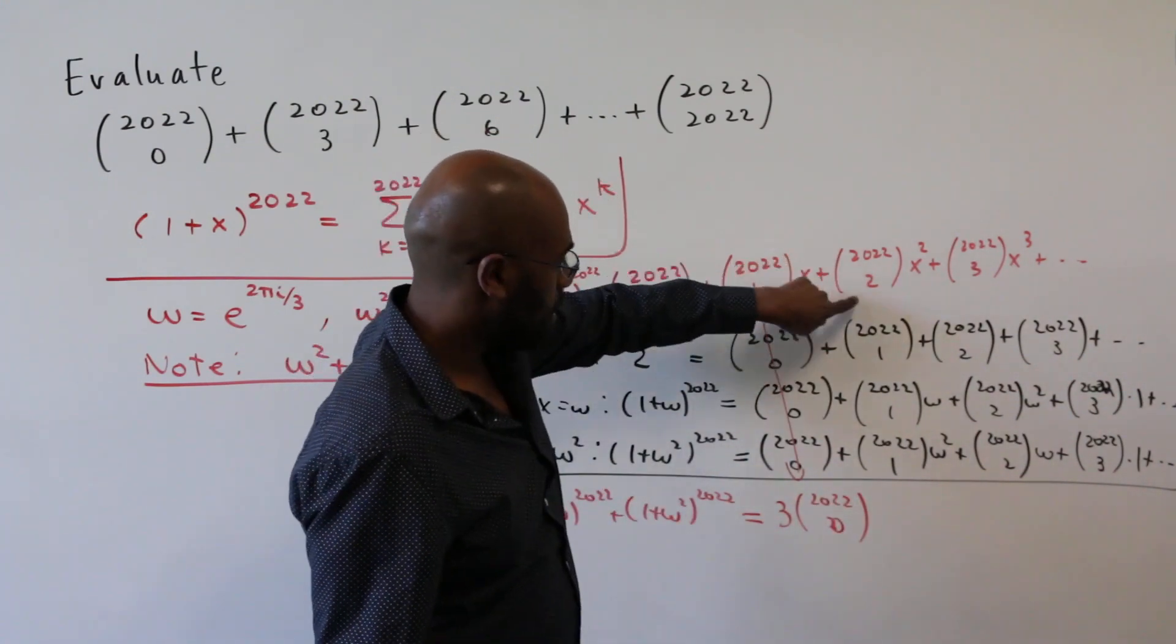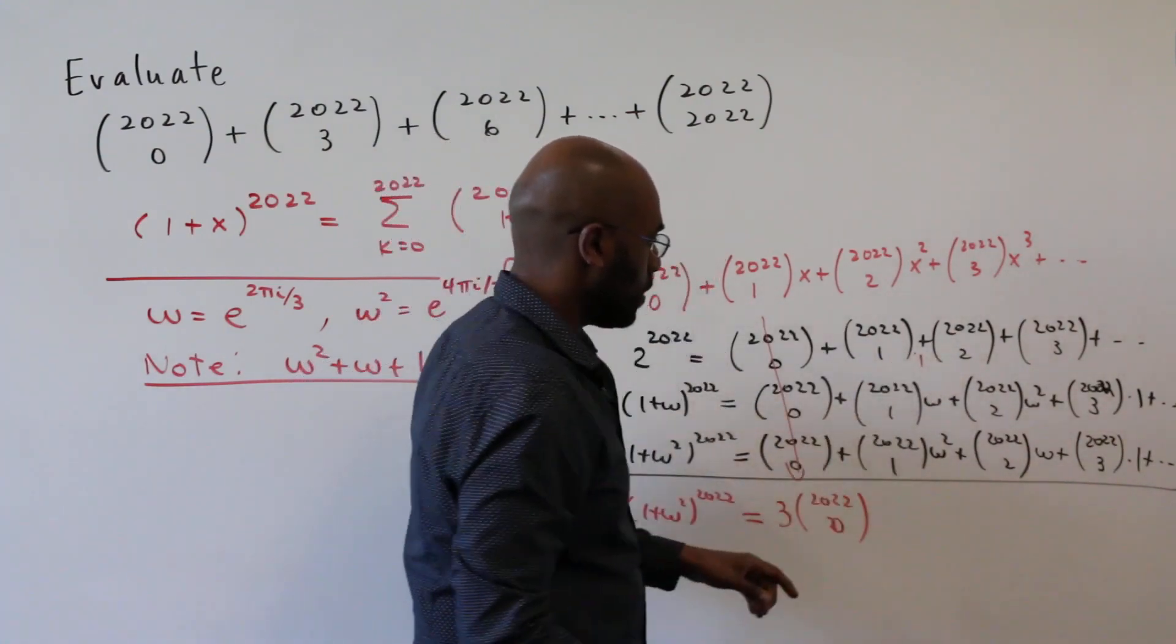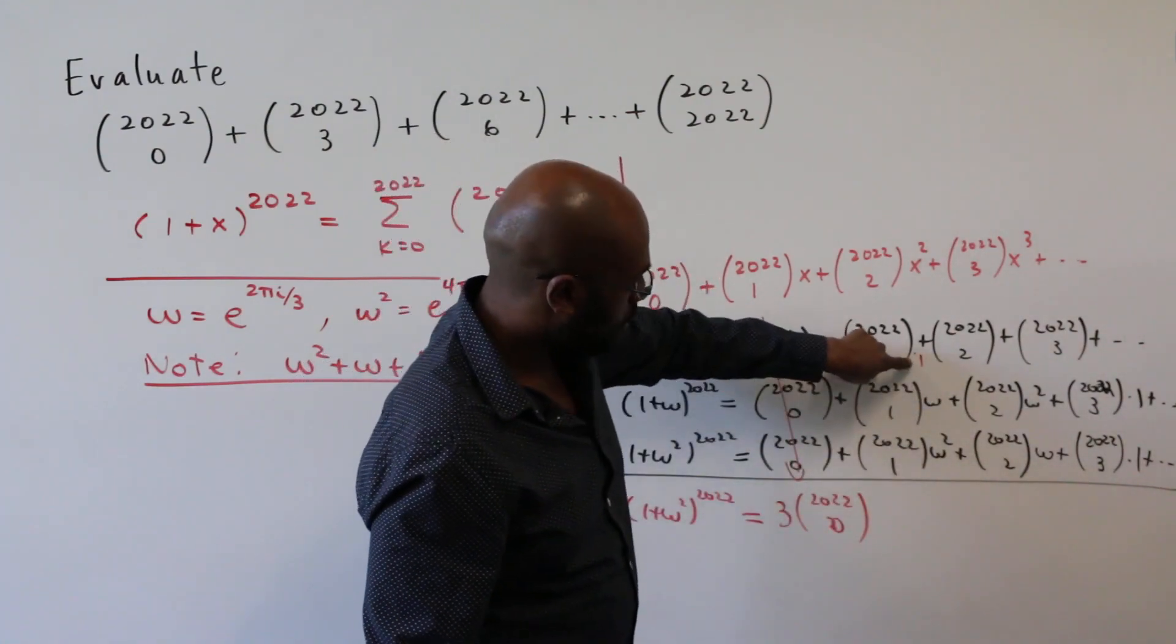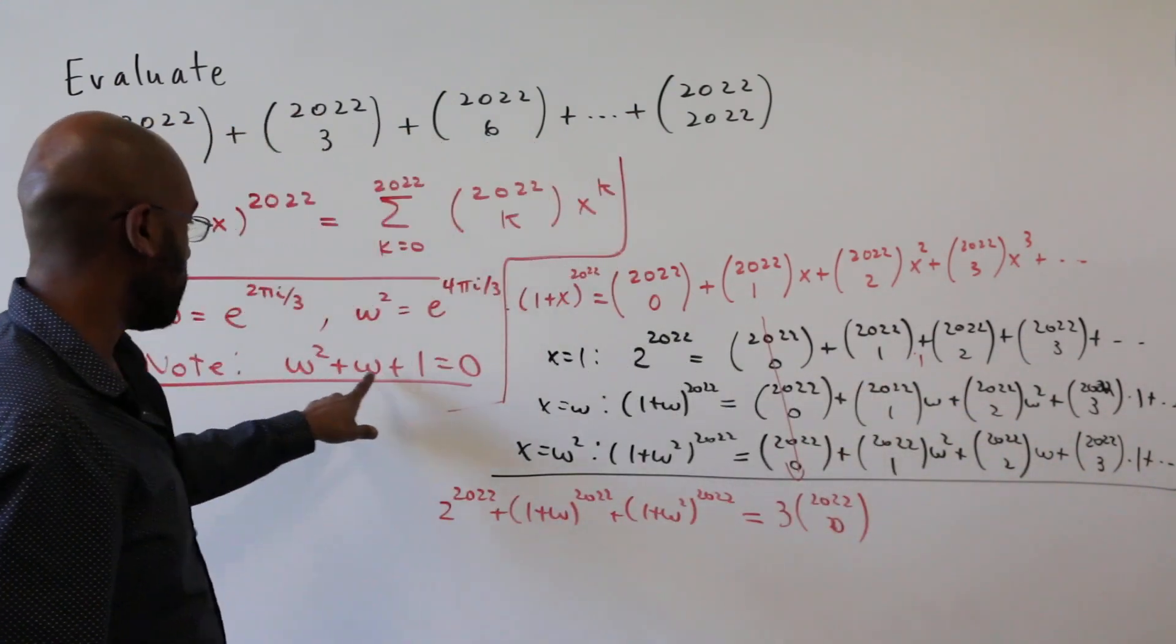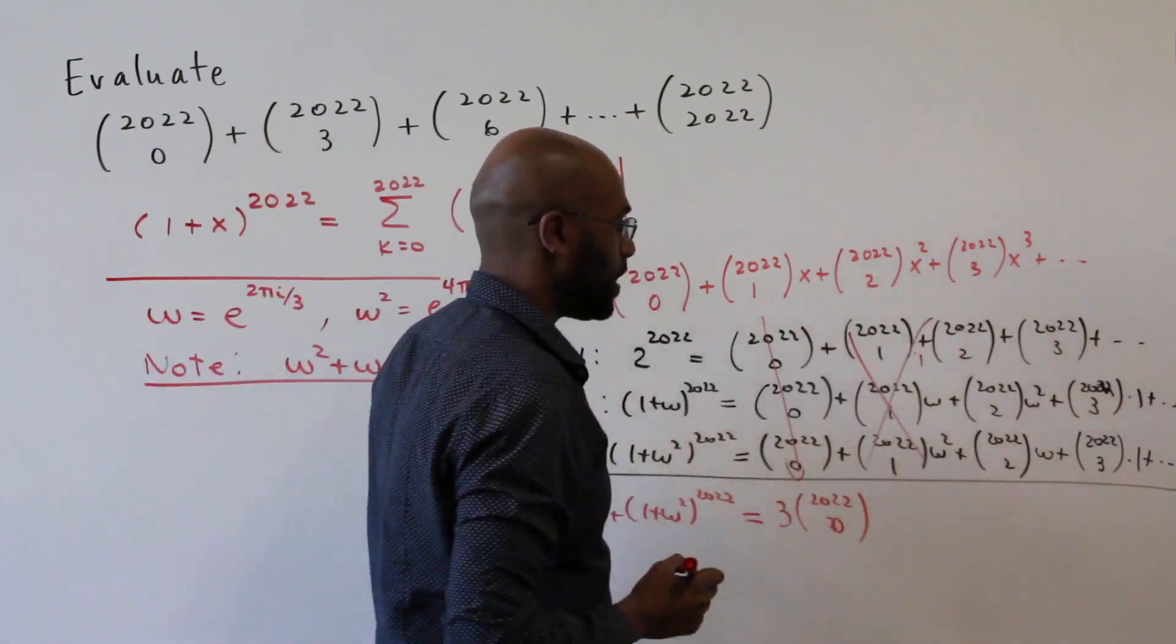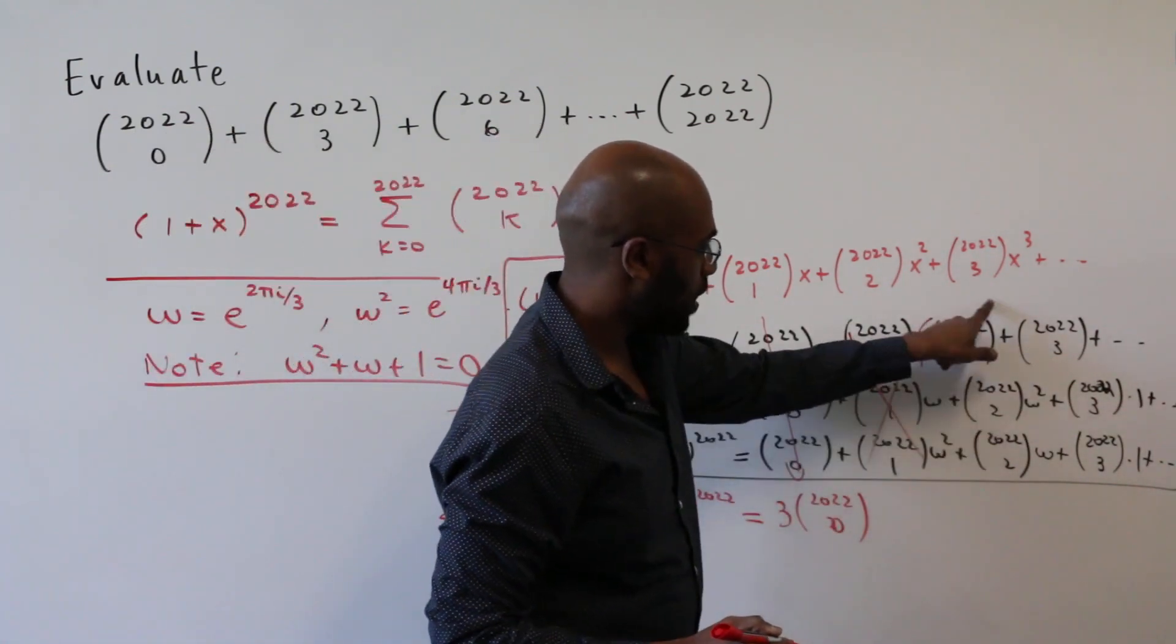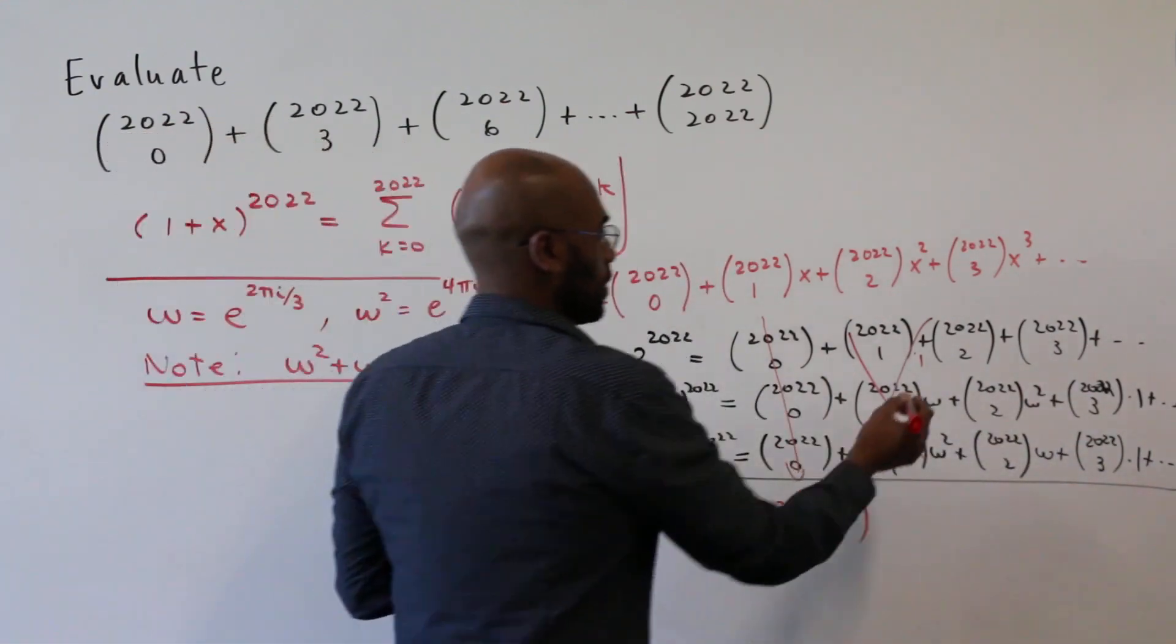Now we'll have a 2022 choose one with a common factor of one plus omega plus omega squared. But one plus omega plus omega squared is zero. So all of this goes away. And by a similar light, here we'll have one omega squared omega, and that sum is still zero. So all of this goes away.